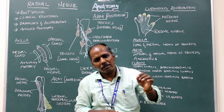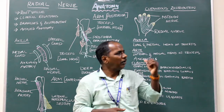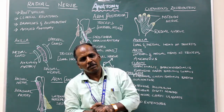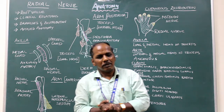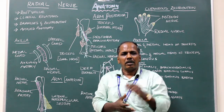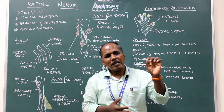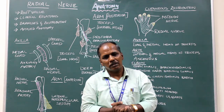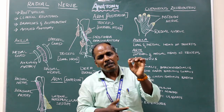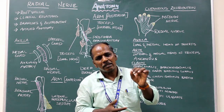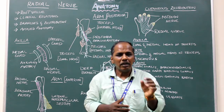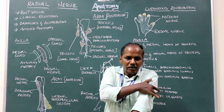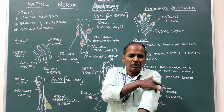The posterior cord is affected, so the radial nerve — being a branch of the posterior cord — is injured in the spiral groove.